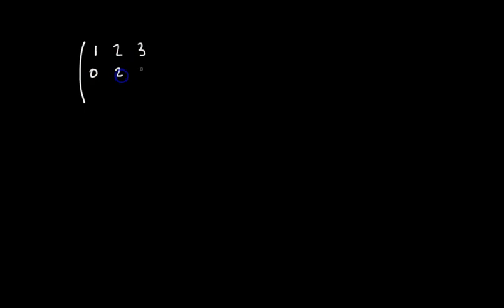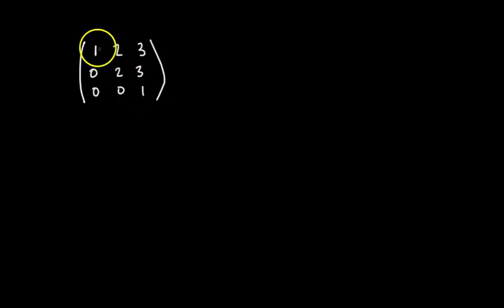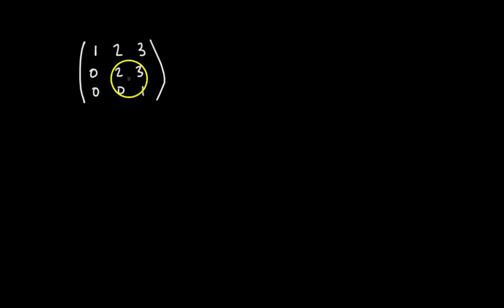Let's talk about what's called an upper triangular matrix. When discussing determinants, we're always working with square matrices. An upper triangular square matrix has zeros below the main diagonal — the diagonal that goes from top left to bottom right. For example, the matrix [1 2 3 / 0 2 3 / 0 0 1] is upper triangular. This doesn't exclude having a zero along the main diagonal itself.